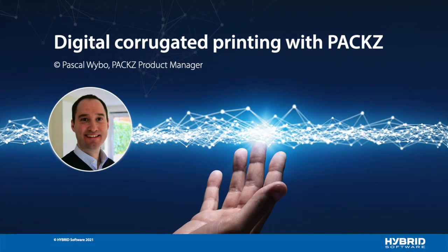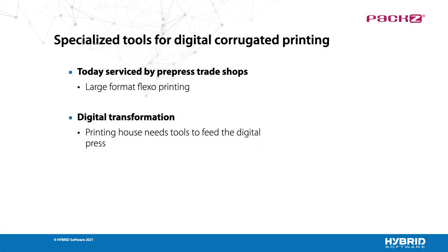Hi there, I'm Pascal Wiebo, Product Manager at Hybrid Software. Corrugated cartons and point-of-purchase displays are the fastest growing packaging type in the global market. The growth in digitally printed cartons is one of the fastest developing segments of the packaging industry. Hybrid Software offers rigid tools for the digital transformation that corrugated printing houses undergo, and that are classically served by prepress trade shops today.